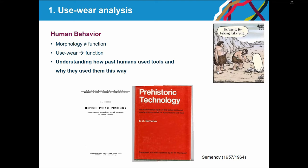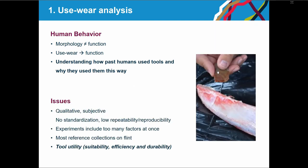We're all familiar with the work developed by Semenov in the early 1960s, which is a starting point for useware methods. Since then, a lot has been done, but despite the promising state of the art, there are a few limitations. These include a lack of a quantitative approach, lack of standardization, and issues with repeatability and reproducibility. Regarding experiments, people have noted that experiments include too many factors at once.